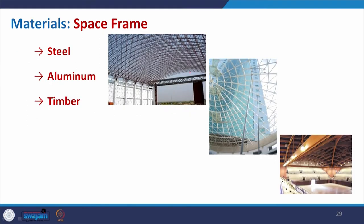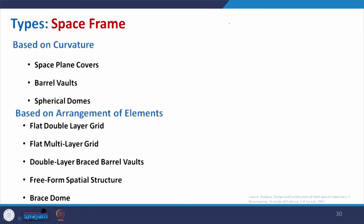Coming to materials: steel can be used, aluminum can be used, and even timber can be used. There is an example of an indoor stadium where the space frame is designed with timber. Aluminum can also be used where the material is very light, and steel is also a common material for space frames.